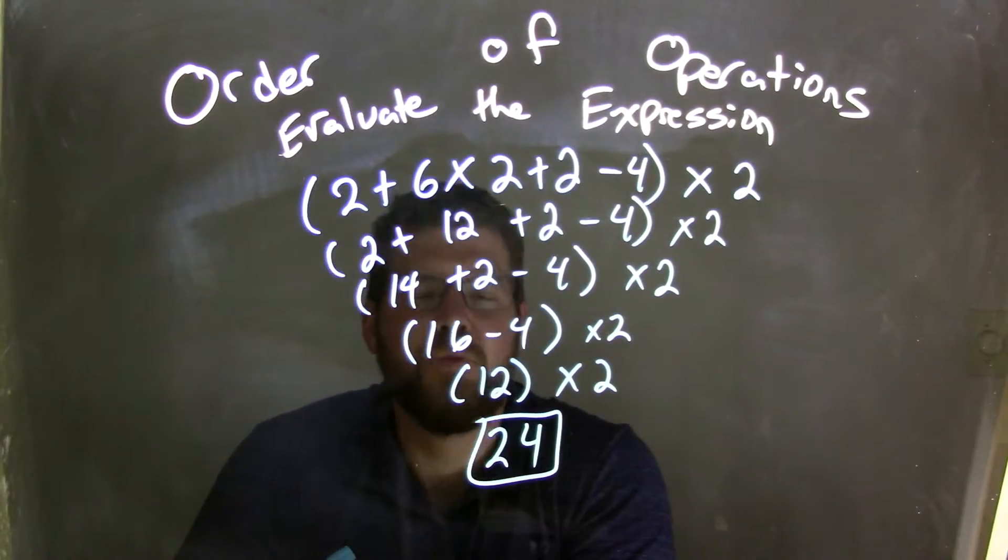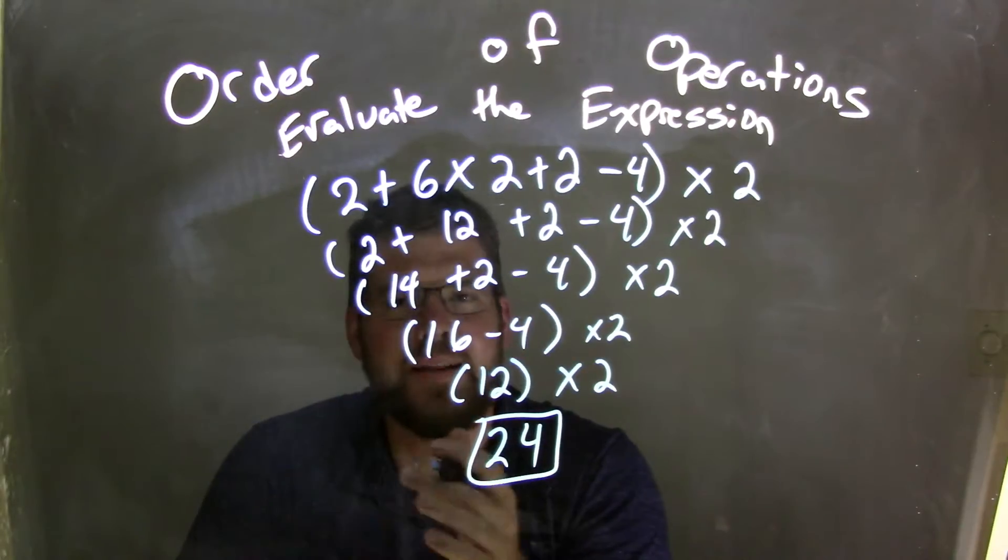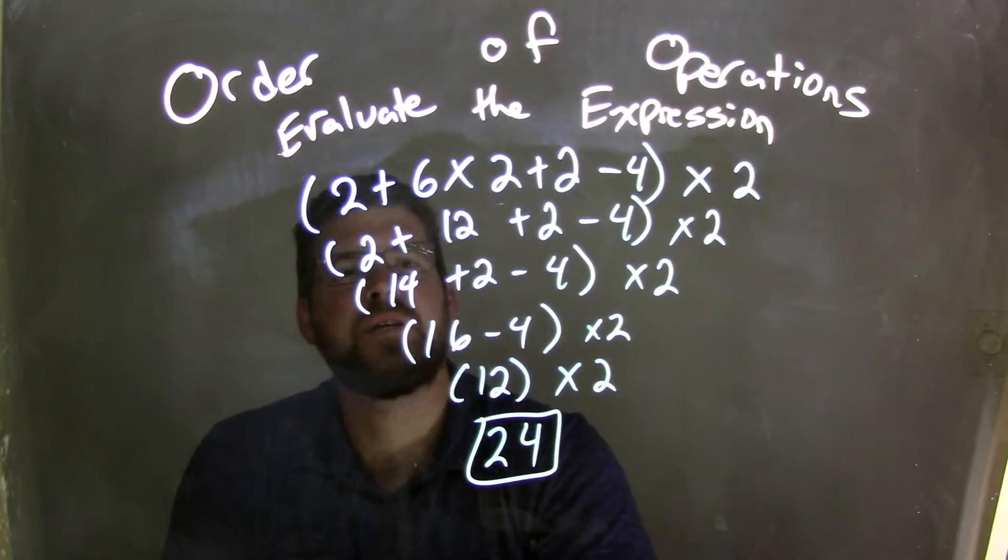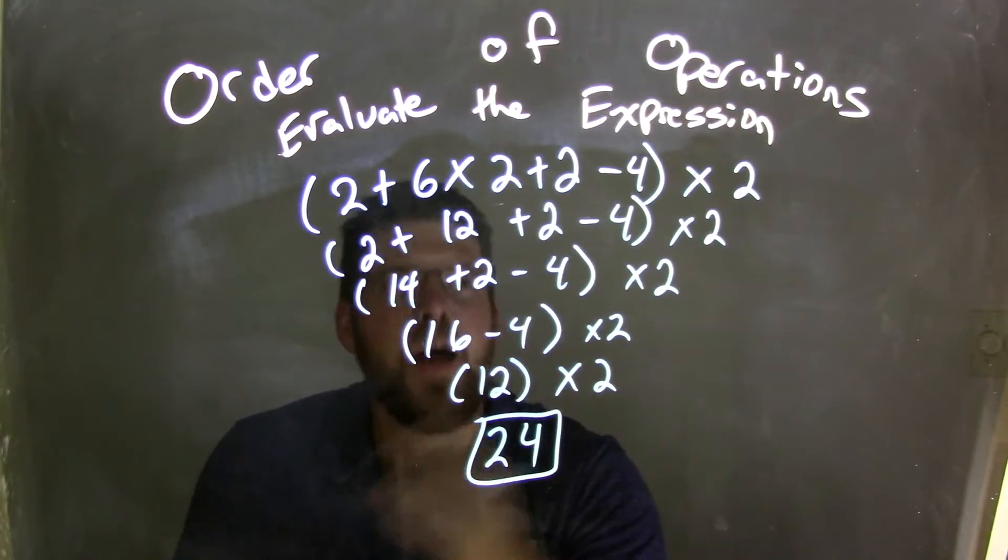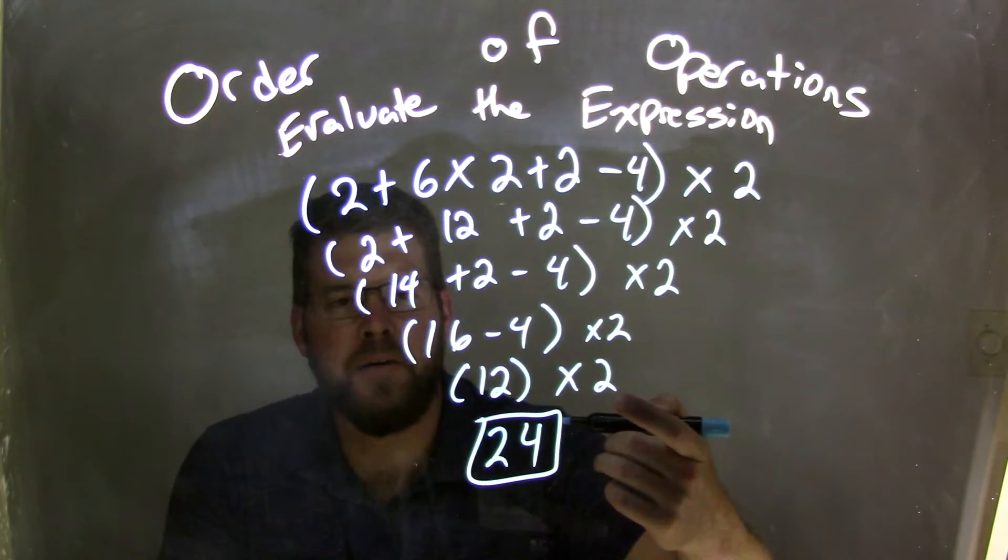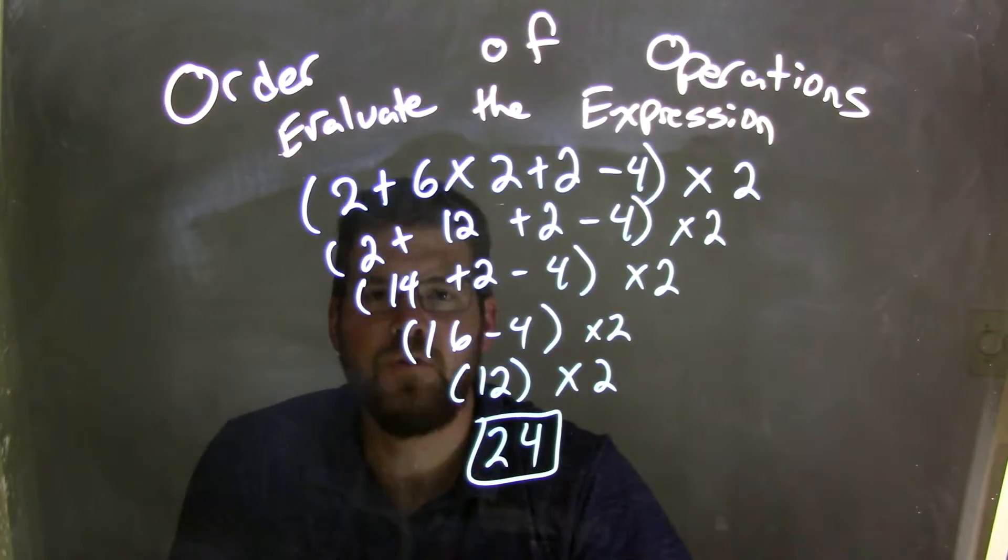From there, we just read left to right. The rest was addition and subtraction. 2 + 12 is 14. 14 + 2 is 16. And 16 - 4 is 12. Bring in the multiply by 2 the whole way down. At the end, 12 × 2 is 24.